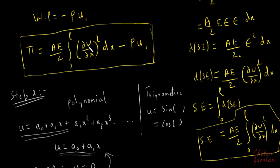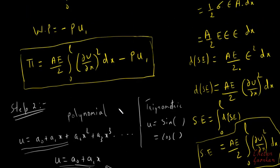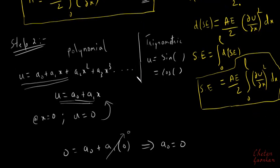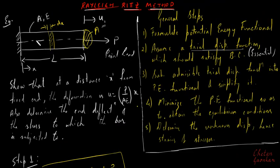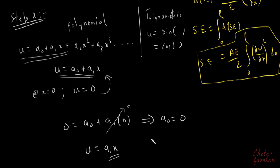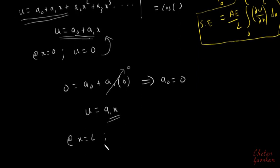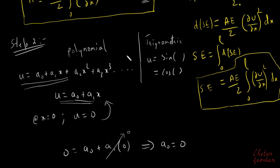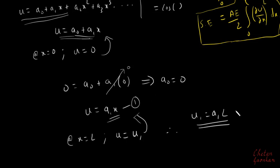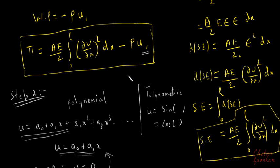We will substitute u = a₁x into the potential functional. We also need an expression for u1. Since u is the displacement at any x, at x equal to L it becomes u1. Therefore substituting x = L into u = a₁x gives u1 = a₁·L. These two expressions — u = a₁x and u1 = a₁L — will both be substituted into the potential functional in step 3.